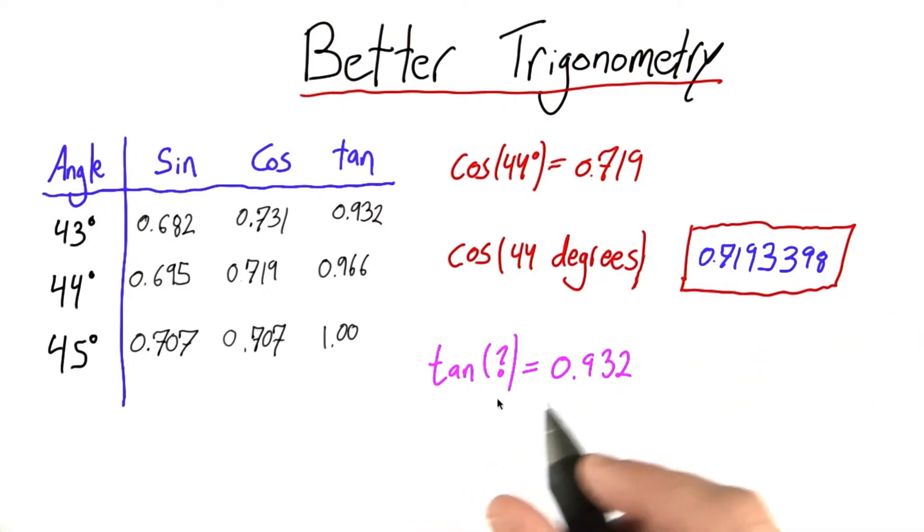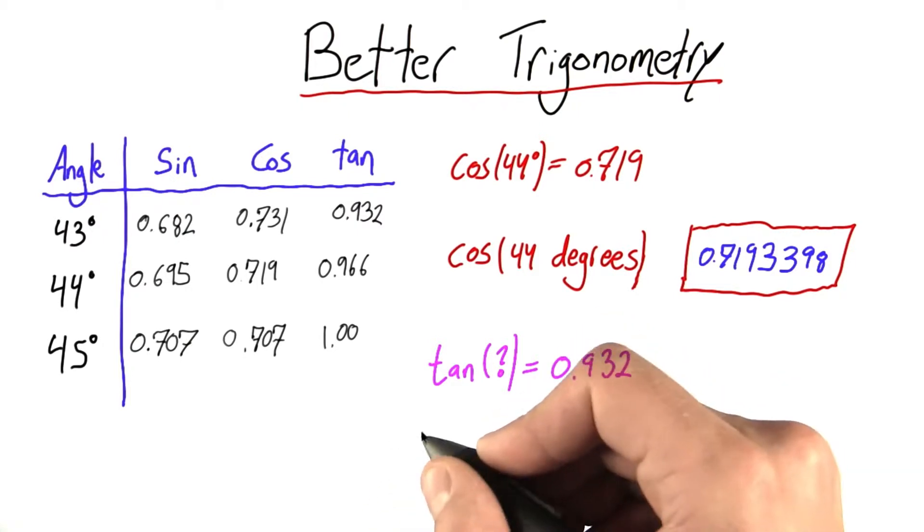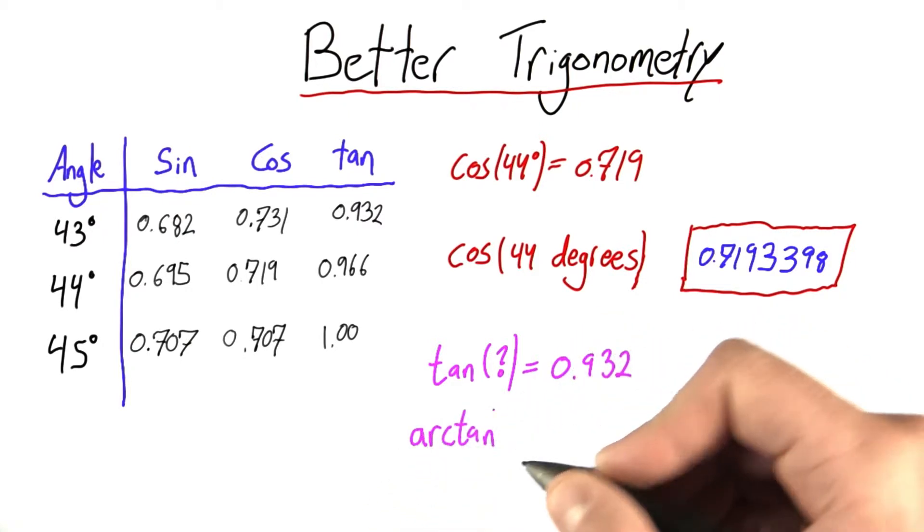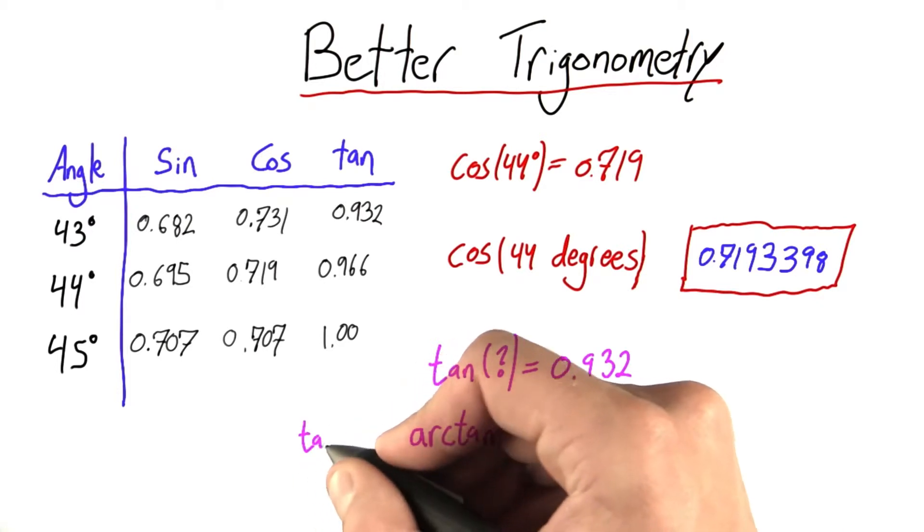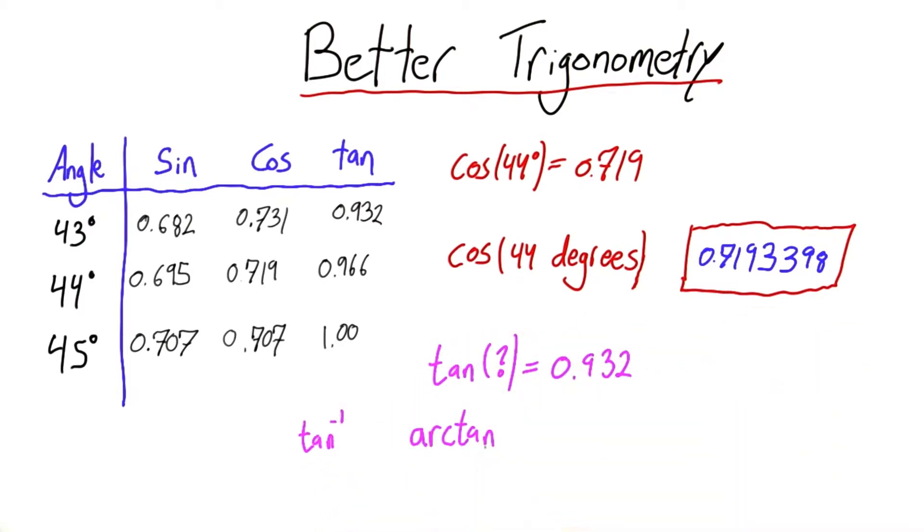The way we specify this inverse tangent is we say arctan, or sometimes tan to the negative 1. But I'll be using arctan for now.